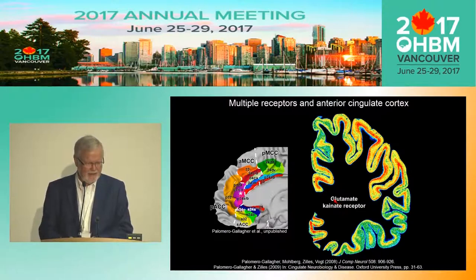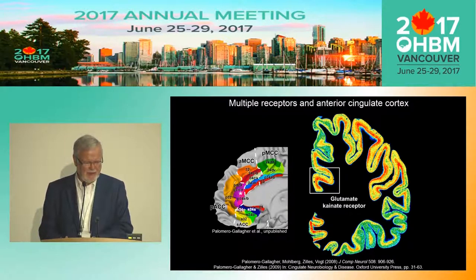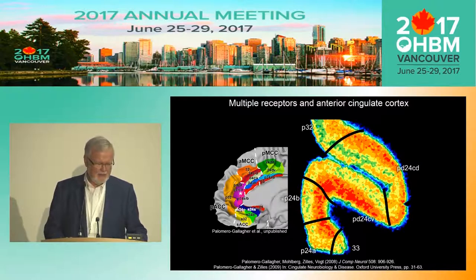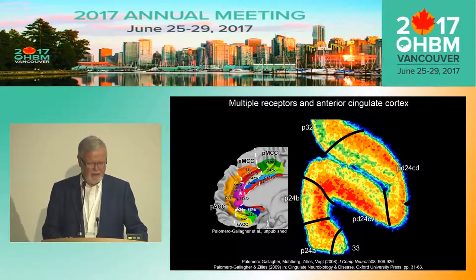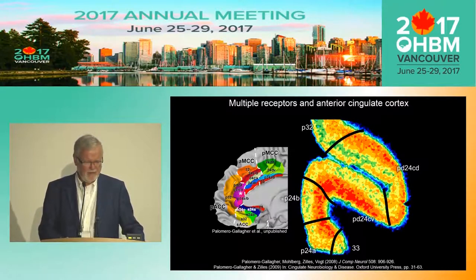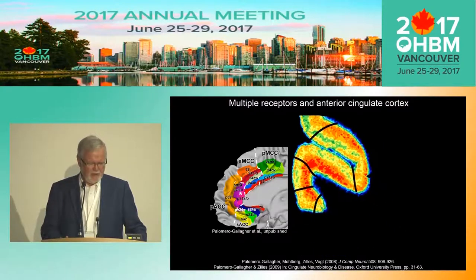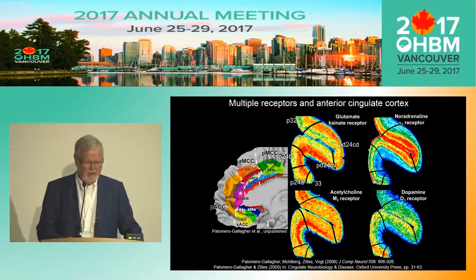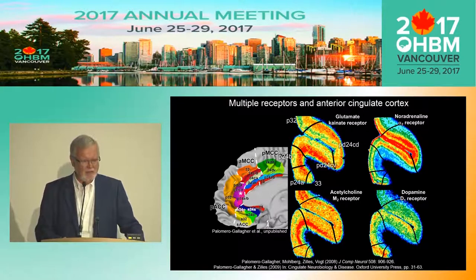You heard this morning about the anterior cingulate cortex, and it was already mentioned that there are differences in receptor density. When we look at the kainate receptor in the rectangular area, you can see that high, lower, and intermediate densities help to delineate area 33 from four different subdivisions of area 24. You also see the border to area 32. Adding other receptors — like noradrenergic alpha-2, muscarinic M2, or the dopamine receptor — confirms these delineations based on multiple receptors.